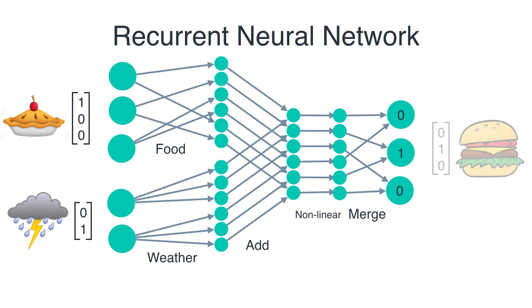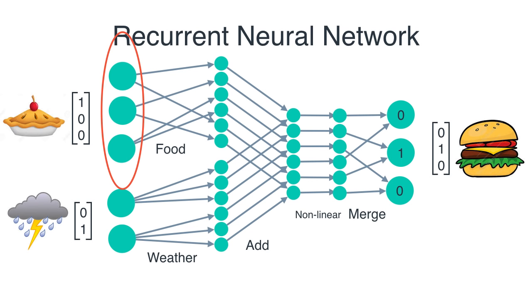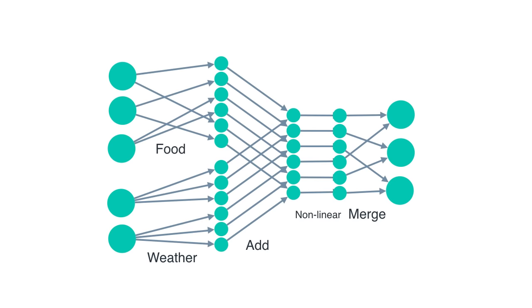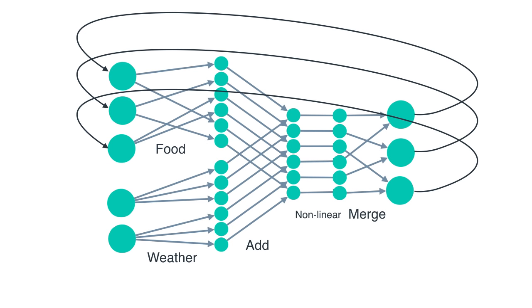The word recurrent is important here. The three output nodes corresponding to food coming out feed back into the neural network as input — that's why it's called a recurrent neural network. Recurrent neural networks are super useful in many situations, particularly when your data is sequential. Whenever your data forms a sequence and the next data point depends a lot on the previous ones, recurrent neural networks are the right tool.